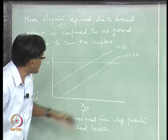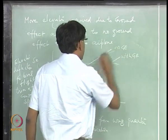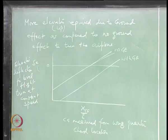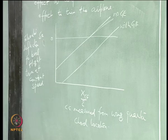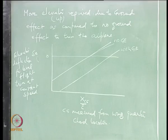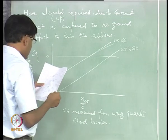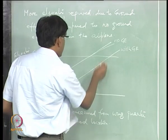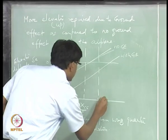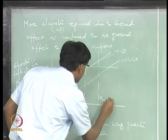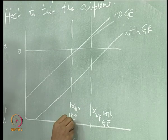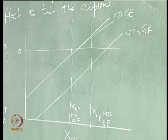These two curves should be parallel. This plot is the plot of elevator required to trim the airplane in level flying condition at constant speed with respect to the CG location. This is the plot of elevator deflection delta_E required for trim.